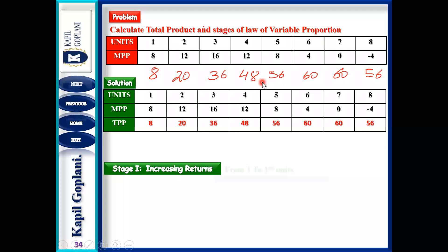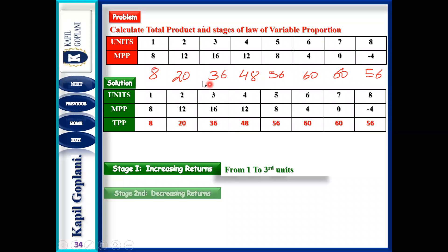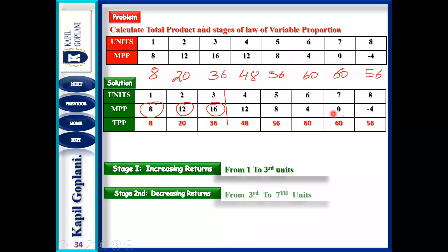Now you have to identify the stage. When MP is rising — 8, 12, 16 — that was the first increasing stage. Then when the diminishing stage started, MP began falling from 12 down to 0. When MP started reaching 0, that stage was the diminishing stage. And the last stage was the negative stage, which started at minus 4.